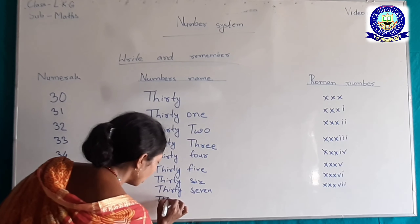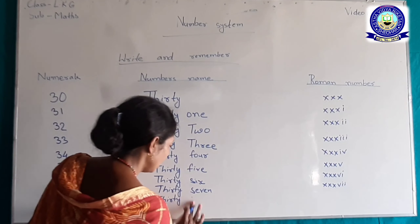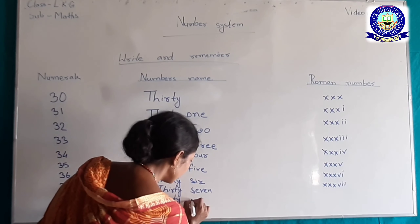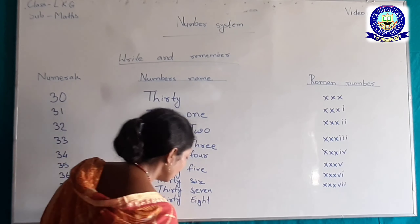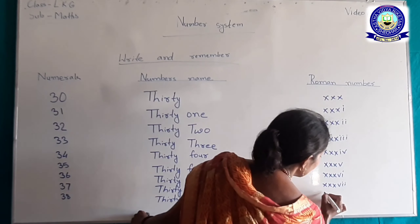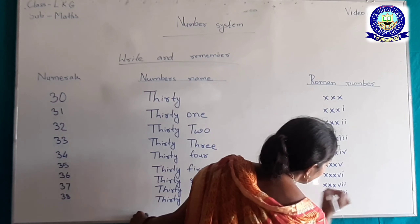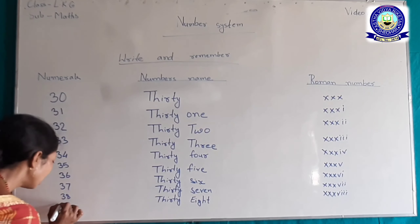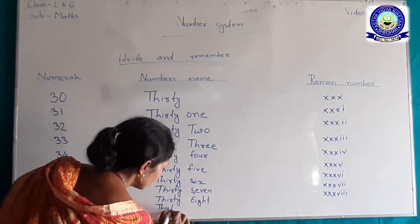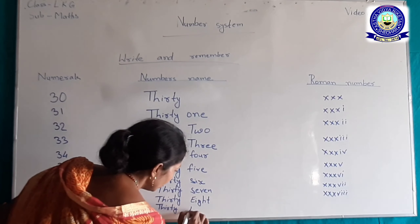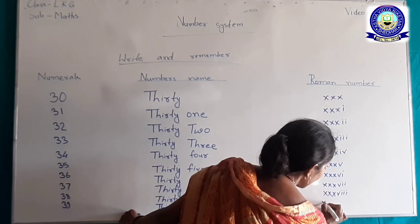38। 38 का word में लिखेंगे: T-H-I-R-T-Y E-I-G-H-T-Y। 38 का Roman number: Triple X, Triple I — XXXVIII। 39, 39, 39। 39 का Roman number Triple X से शुरू होगा — XXXIX।